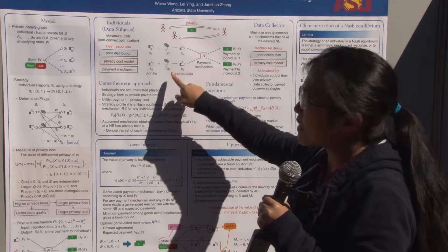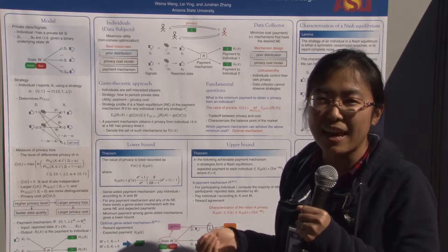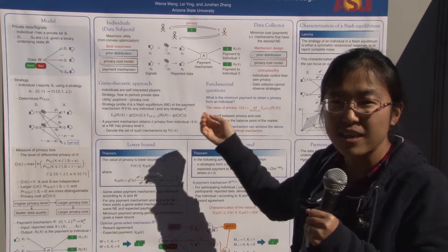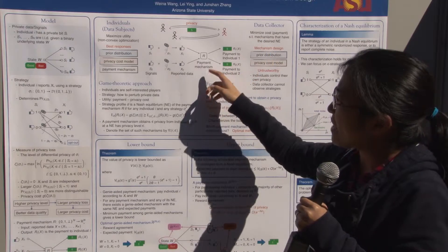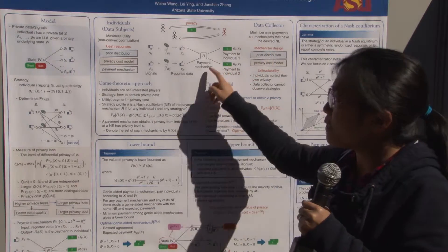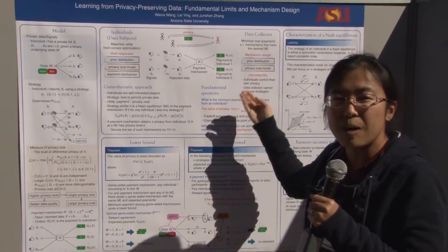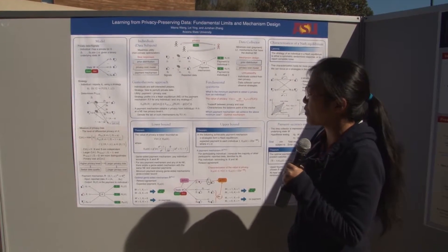To protect the privacy, each individual randomly perturbs their data and reports the perturbed version. The data collector uses a payment mechanism to pay the individuals, which is a function of the reported data. And the outputs are the amounts of payments to the individuals.